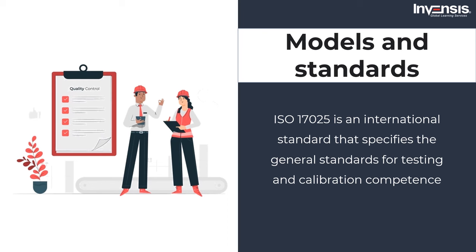There have been a variety of SQA approaches. For example, capability maturity model integration, or CMMI, is a performance improvement focused SQA model. CMMI ranks the maturity levels of various areas within a company and suggests possibilities for improvement. So those were some of the quality assurance methods.